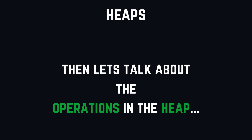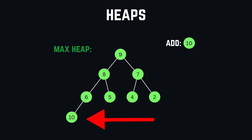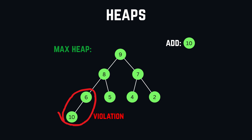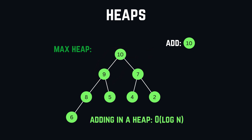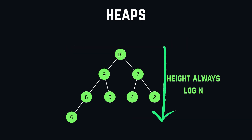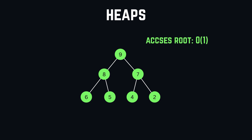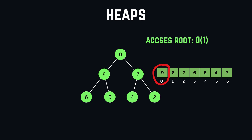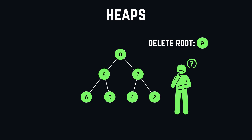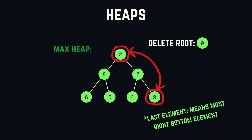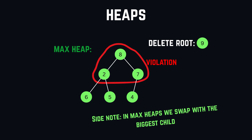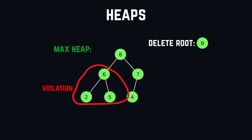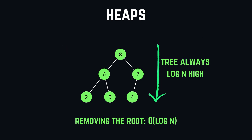When we add an element to our heap, we place the new element at the bottom of the tree at the leftmost position. We then compare it with its parent, and if the heap criteria is violated, we swap the elements. We repeat this process until the heap property is restored or we reach the root — this operation runs in O(log N) time because the tree is always O(log N) high. Accessing the root is O(1) since in the array implementation it's always at index zero. To delete the root, we swap it with the last element, remove the last element, then compare the new root with its children and swap if the heap criteria is violated, all the way down — this also runs in O(log N) time.